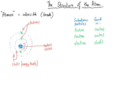Subatomic particles are absolutely tiny, so how heavy each individual particle is is really hard to get your head around. What we do instead, which is much easier, is compare how heavy they are to each other. Protons and neutrons have the same mass, so we give that the number 1. The mass of a proton is 1 and the relative mass of a neutron is 1. Electrons are about 2,000 times smaller than a proton or neutron, so their mass is either 1/2000 or effectively 0.